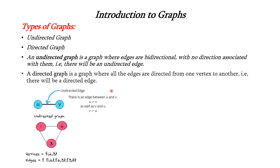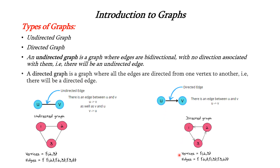Next is directed graph. Here the edges are directed from one vertex to another vertex, so there will be a directed edge between two vertices. We have U and V, and the connecting line has a direction — from U to V, not reverse. The directed graph can be represented like this: we have three vertices and the edges are represented as pairs according to direction — (2,1), (1,3) and (3,2).